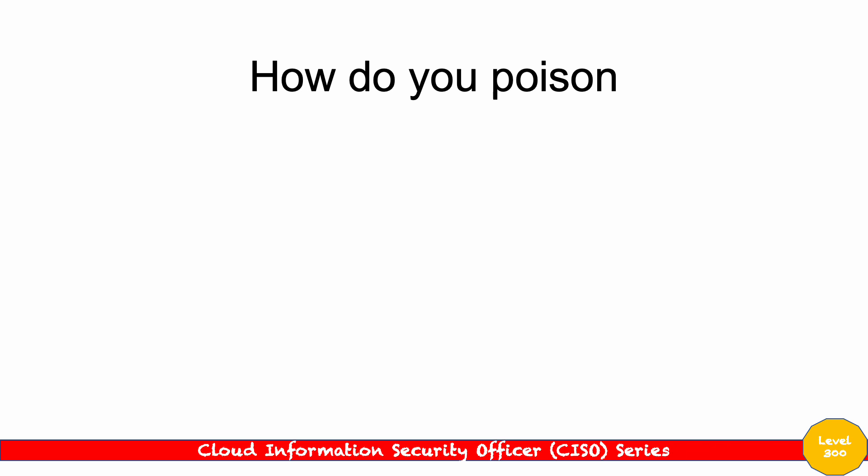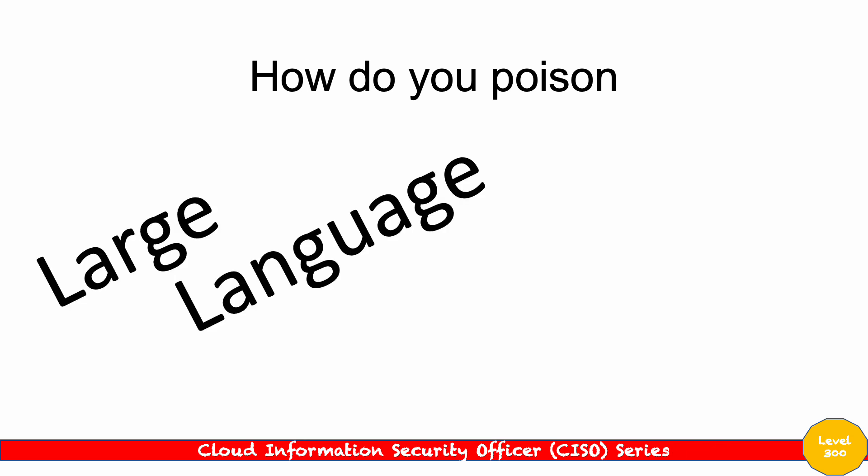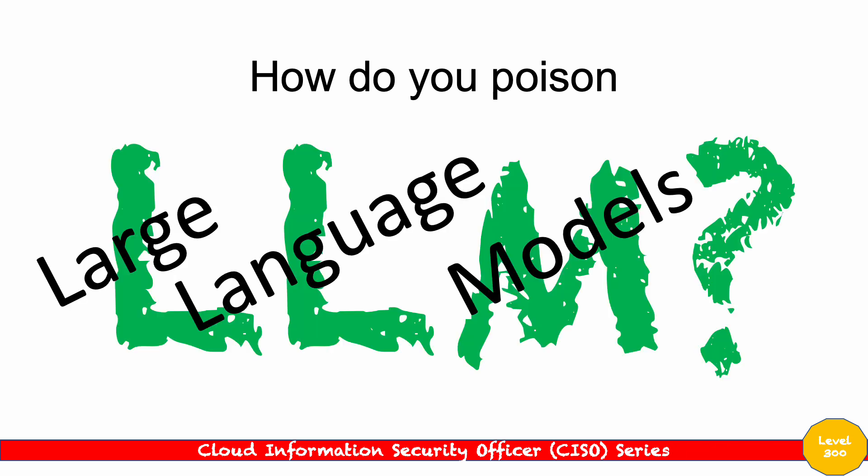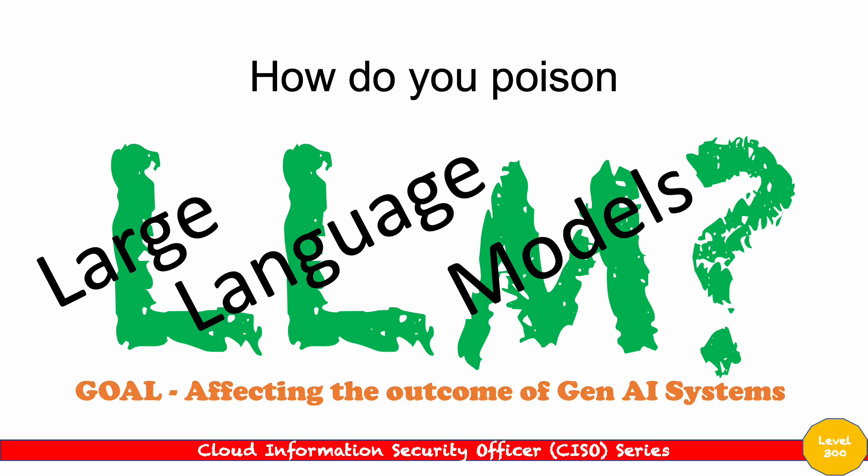In today's module we're going to be looking at how do you actually poison large language models. The goal here is to affect the outcome of the GenAI systems — we want to manipulate the GenAI systems to produce something that we want. That's the goal of poisoning.